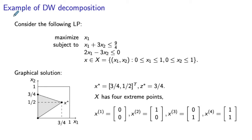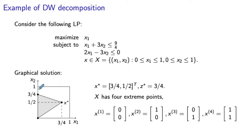In this video we consider a simple example of Dantzig-Wolfe decomposition. We focus on an LP with two variables: we maximize x₁ subject to two complicating constraints. In addition, we have the set constraint given by a simple box, so x₁ and x₂ are both between zero and one.